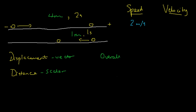What about the velocity? Like displacement, velocity is a vector, so we can show direction using plus and minus signs. We decided the right-hand side is positive, so the velocity is plus 2 meters per second. In the next part, it moves back 1 meter in 1 second, so the speed is 1 over 1 — 1 meter per second — but it's going to the left, the minus direction. So the velocity is minus 1 meter per second.